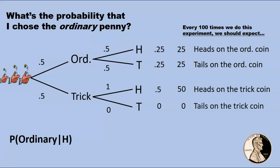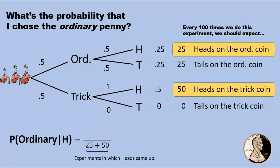Now, we want the probability of getting the ordinary coin given that we flipped a head. So we're not really considering all hundred of these experiments, only the ones in which heads came up. Thus, in the probability we're trying to compute, our denominator is going to be 25 plus 50, since this is the total number of experiments in which heads came up. Well, we're interested in the probability that we drew the ordinary coin. So of these 75 experiments, how many of them involved the ordinary coin? 25.